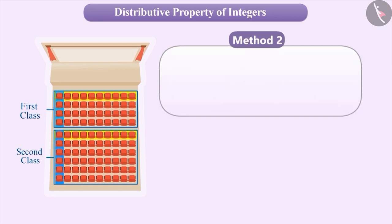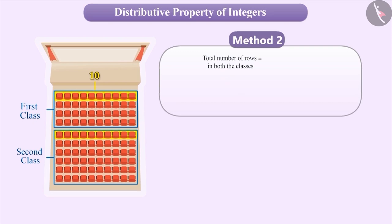Method 2: If you look carefully, you will see that the number of seats in each row is equal in both classes, which is 10. The total number of rows in both classes is 4 + 6. So, the total number of seats in the auditorium can be calculated by simplifying 10 × (4 + 6). After solving this, the answer will be 10 × 10 = 100.